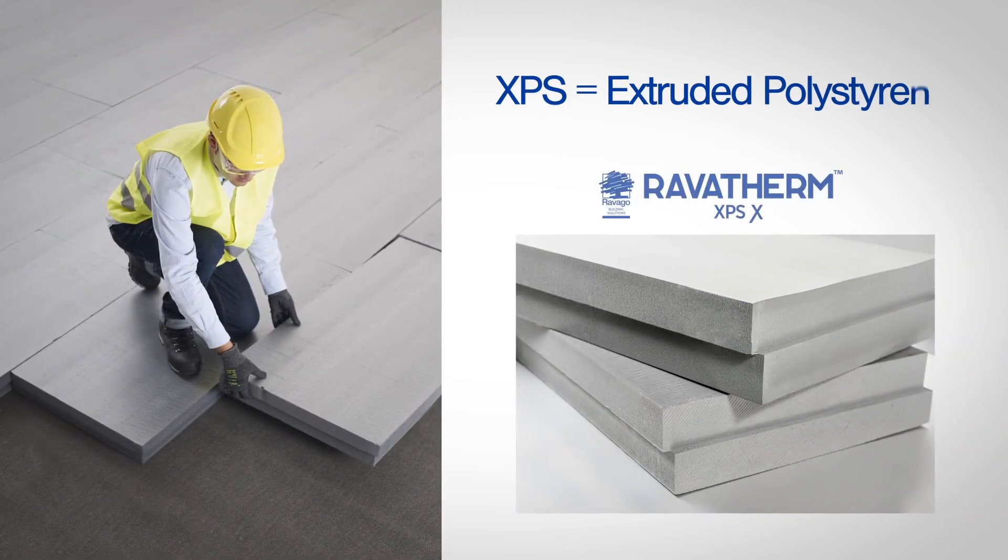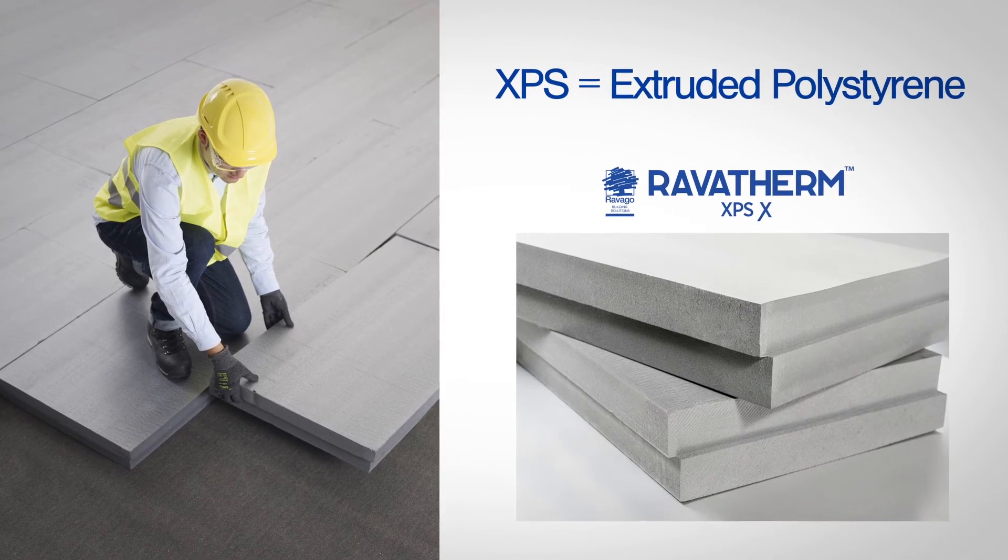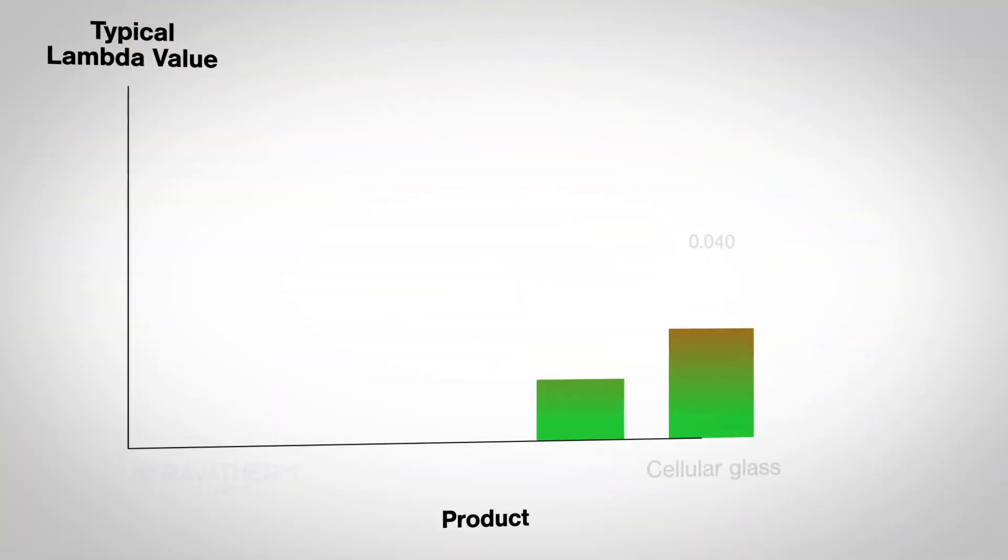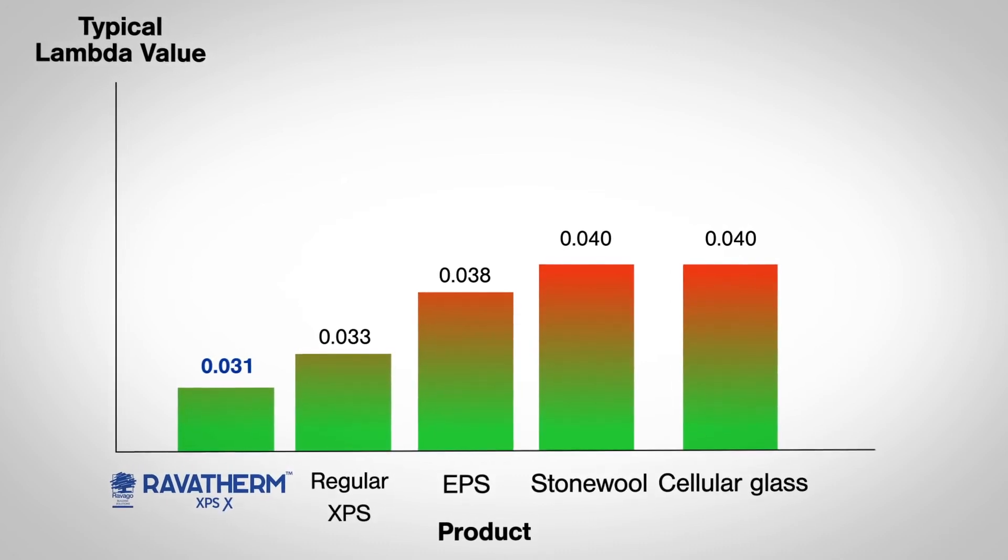Ravotherm XPSX is the UK's best performing range of extruded polystyrene insulation boards for inverted flat roofs. All of our insulation boards offer exceptional long-term thermal performance and have high compressive strength.